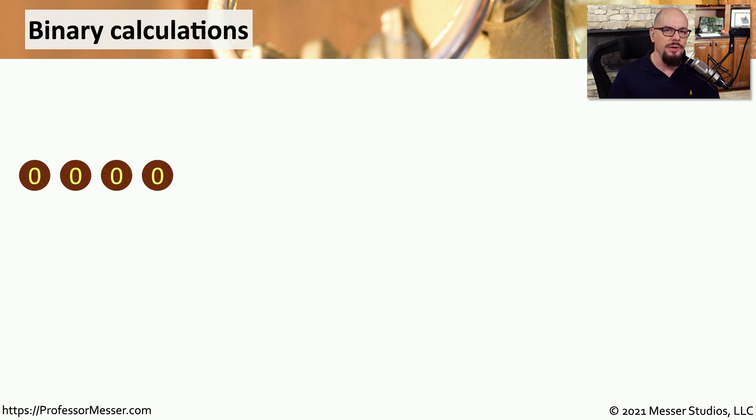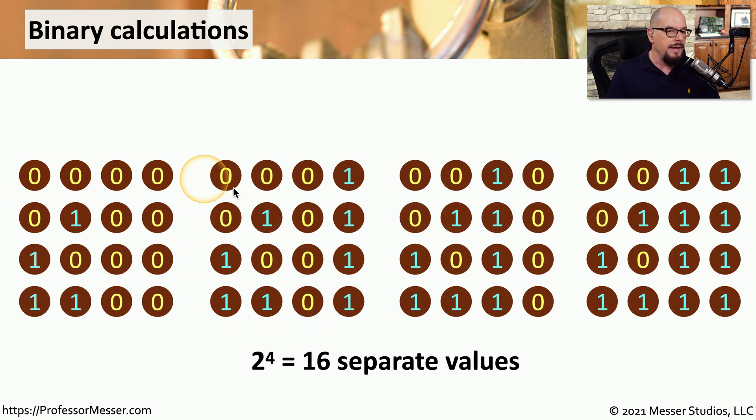Let's compare classical computing to quantum computing. In our classical computing, we might want to perform a binary calculation with four separate bits, and we can take any combination of those four bits to come up with a value. We can combine all the different permutations of those four bits and look at every combination to come up with 16 separate unique values.